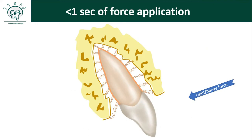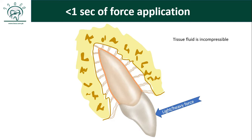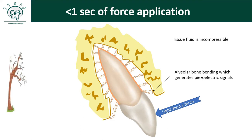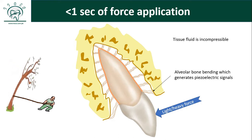Now let's see how the periodontium reacts to applied orthodontic force. Initially, when the force is applied — whether heavy or light — the initial reaction is the same. The tooth moves along with the alveolar socket because the PDL's tissue fluid is incompressible. The tooth moves along with the whole socket, resulting in bending of the alveolar bone. This can be understood with the example of a tree: if you pull the tree with a rope, it bends in the direction of force with no change in the rope's orientation.